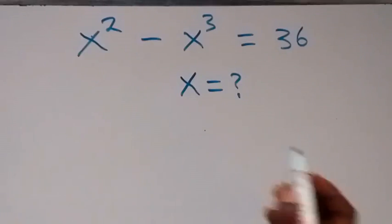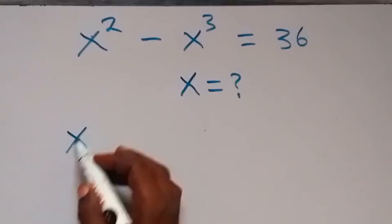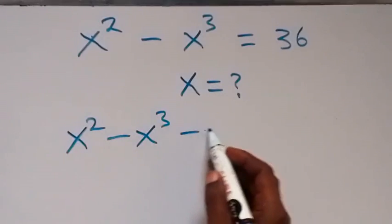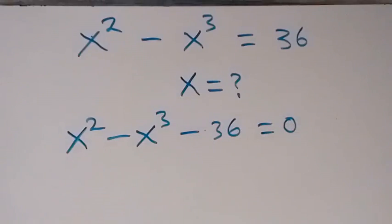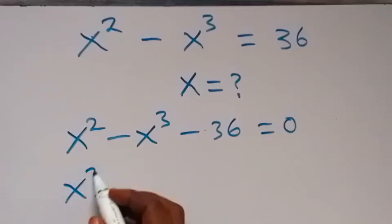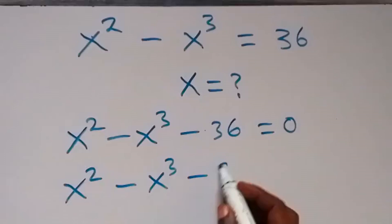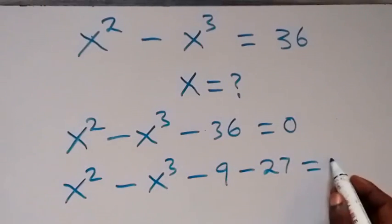From here, let's bring 36 to this side and this becomes x squared minus x cubed minus 36 equals 0. Then we can separate 36 as minus 9 minus 27, which gives us minus 36. So we have x squared minus x cubed minus 9 minus 27 equals 0.